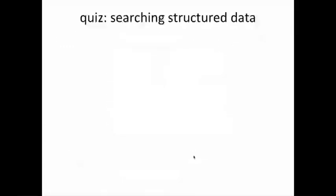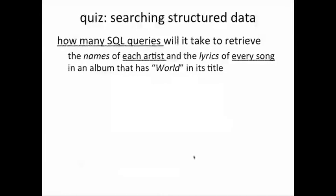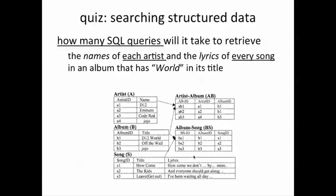Things get a little more difficult if one now wants more information from this complex schema. So let's ask how many SQL queries will it take to retrieve the names of each artist and the lyrics of every song in an album that has 'world' in its title. Take a look at the schema and answer the question. Please avoid complex joins which join every single table in this schema.